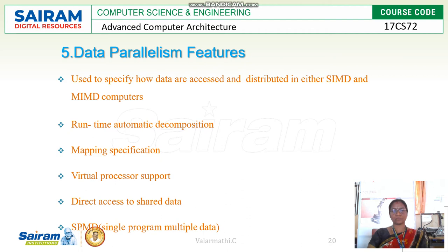The fifth feature is data parallelism. This is used to specify how data are accessed and distributed in either SIMD and MIMD computers. The features here include: runtime automated decomposition, mapping specification, virtual processor support, direct access to shared data, and SPMD — single program multiple data.